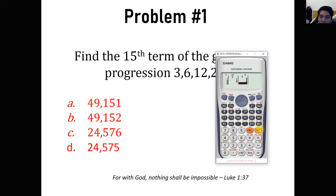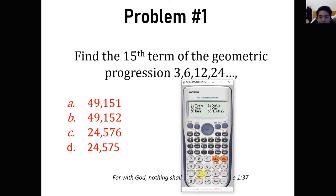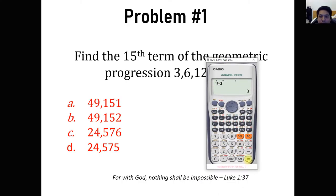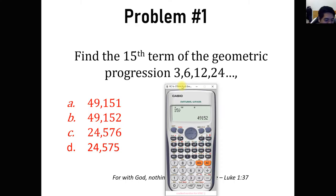Click AC to store the values. Then go to SHIFT STAT, then REG — click 5. We are asked to find the value of the 15th term, so we input 15, then SHIFT STAT, REG, and select y-hat. Upon pressing equal, we get 49,152.